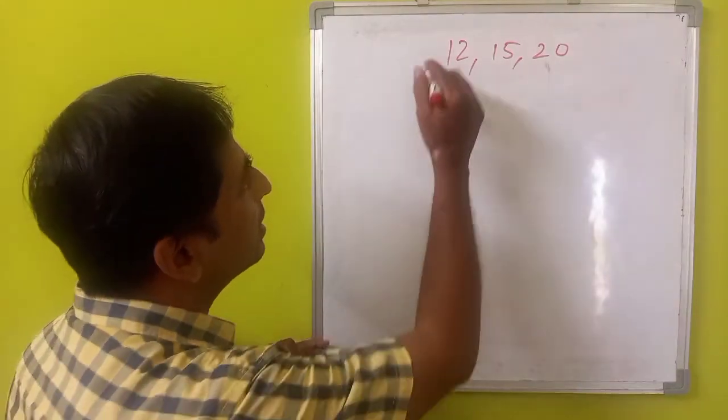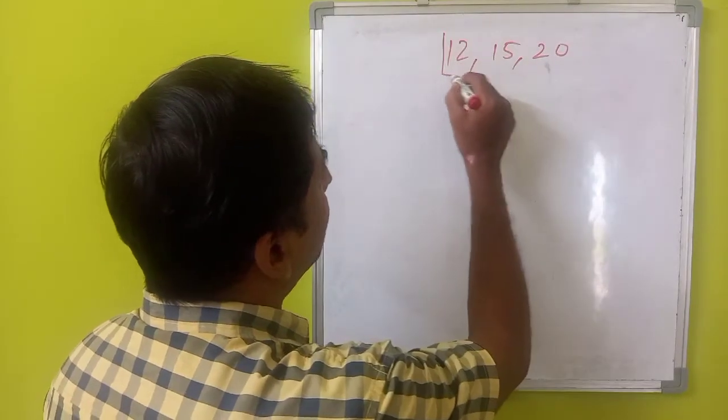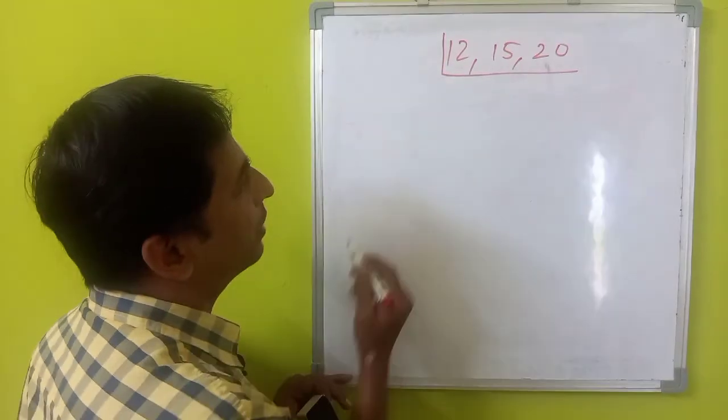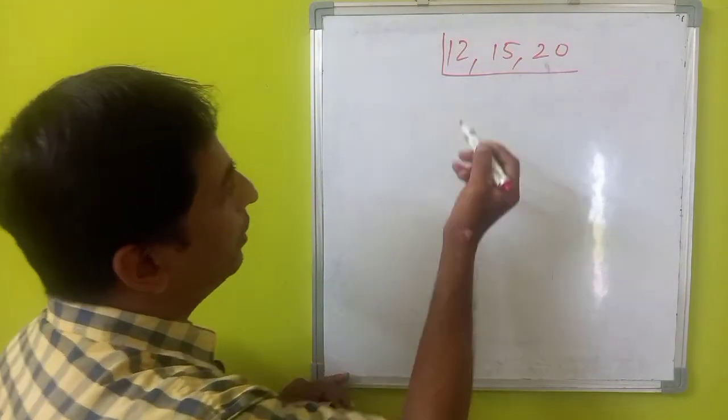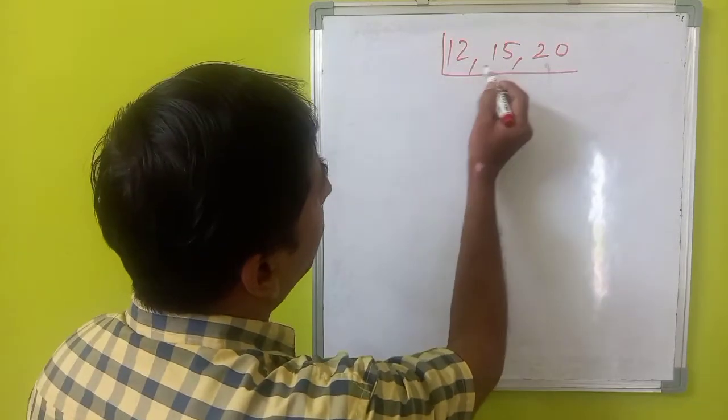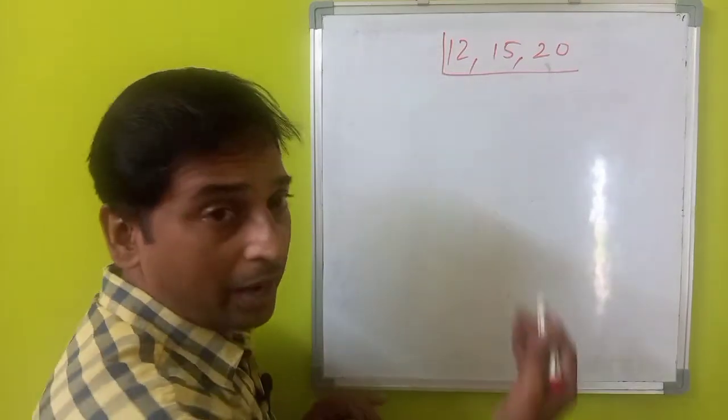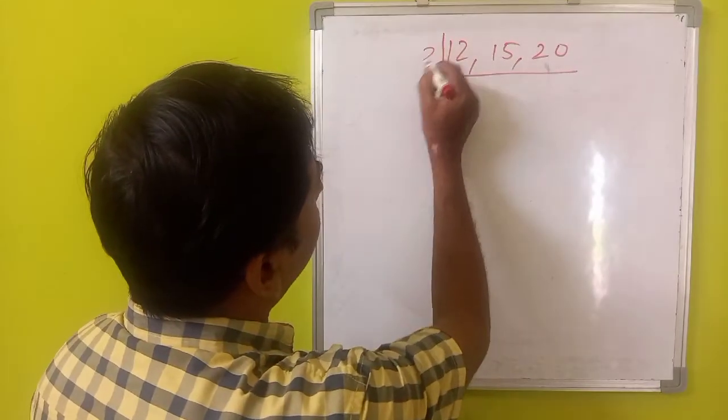So, we can start solving it by taking the LCM of these three numbers. The way to find the LCM is you can divide it by any prime numbers. So, let us try with 2.